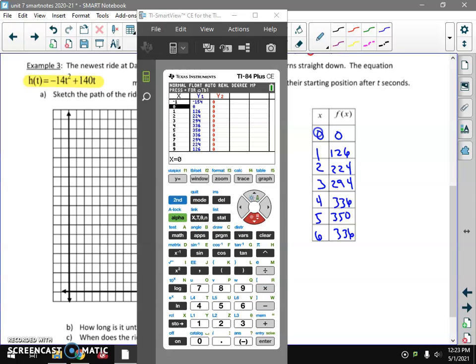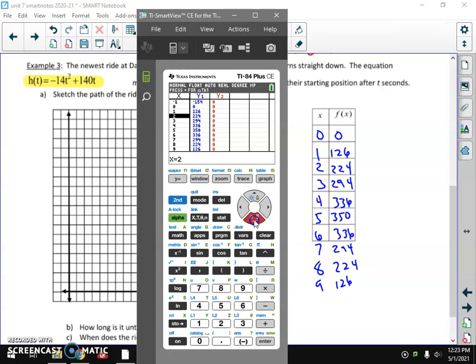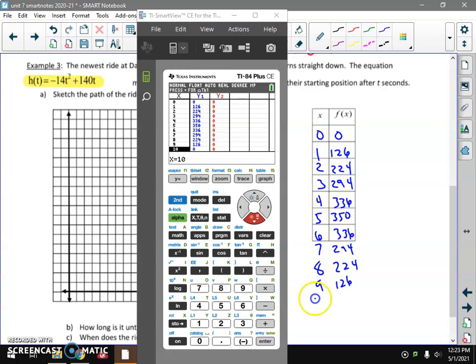Six is 336. Let's go seven, 294. Let's go eight, 224. Nine, 126. And what happens down at the bottom? Why do I like 10? Because 10 seconds after the ride starts, I'm back on the ground.